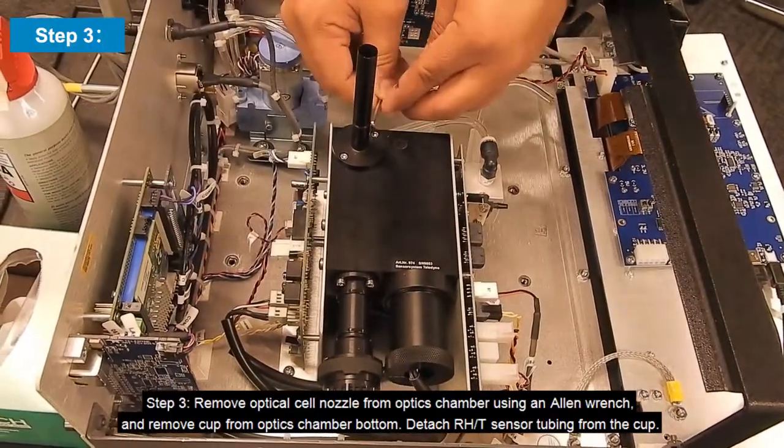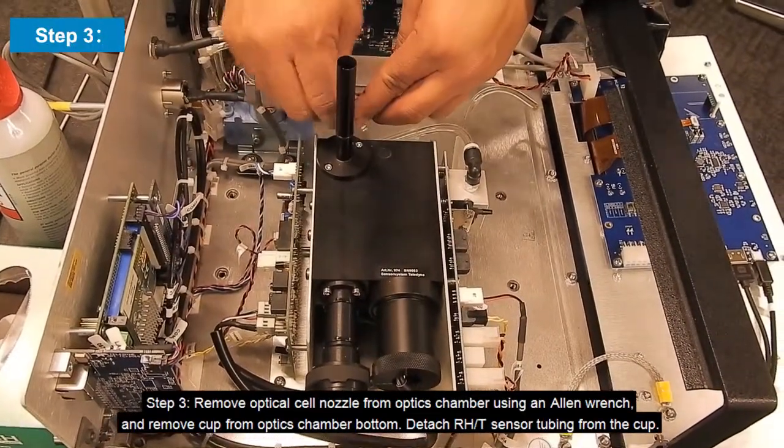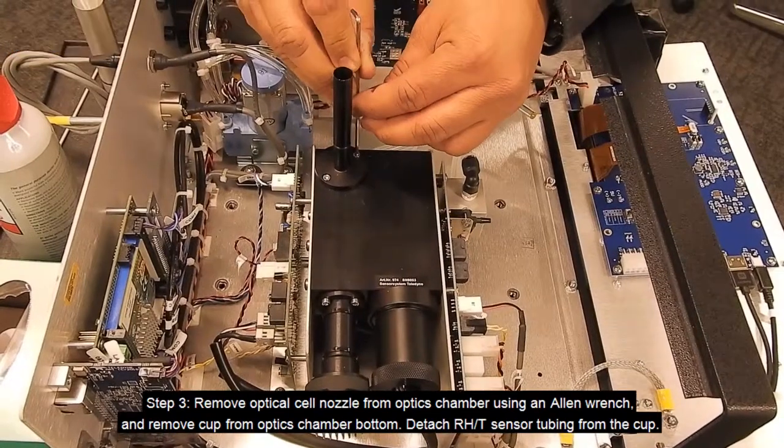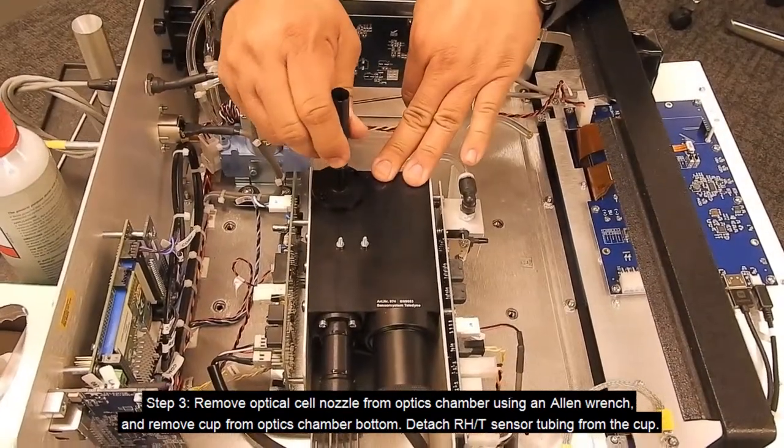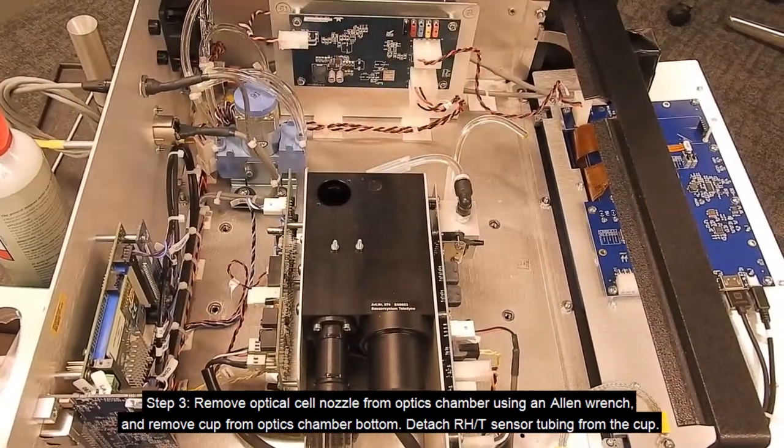Step 3: Remove the optical cell nozzle from the optics chamber using an Allen wrench, and detach the relative humidity and temperature sensor tubing from the cup.